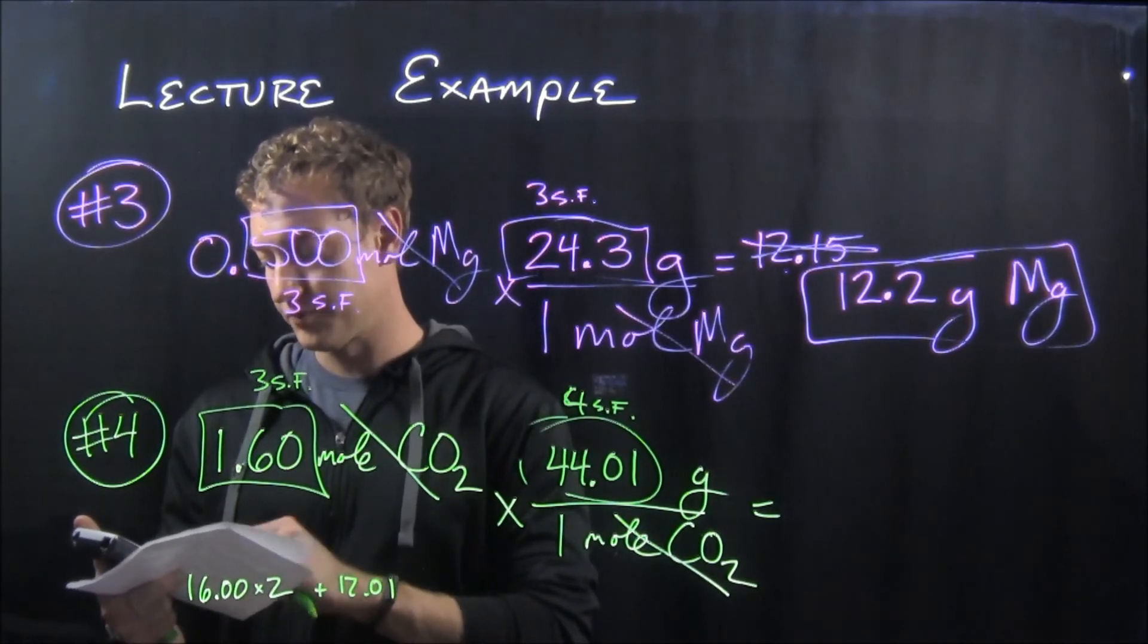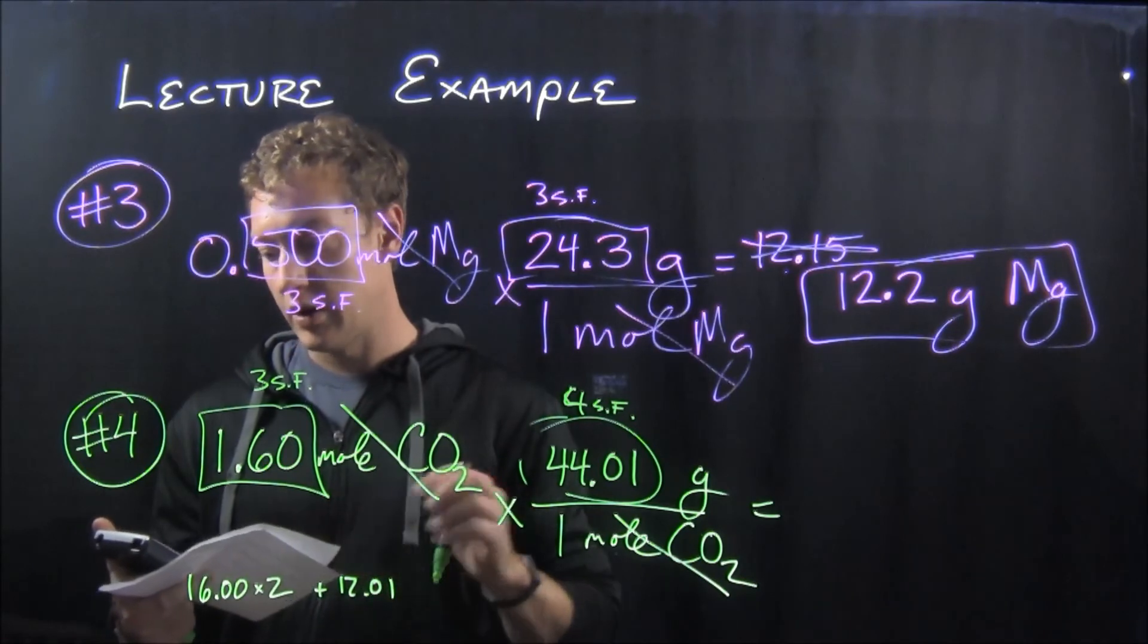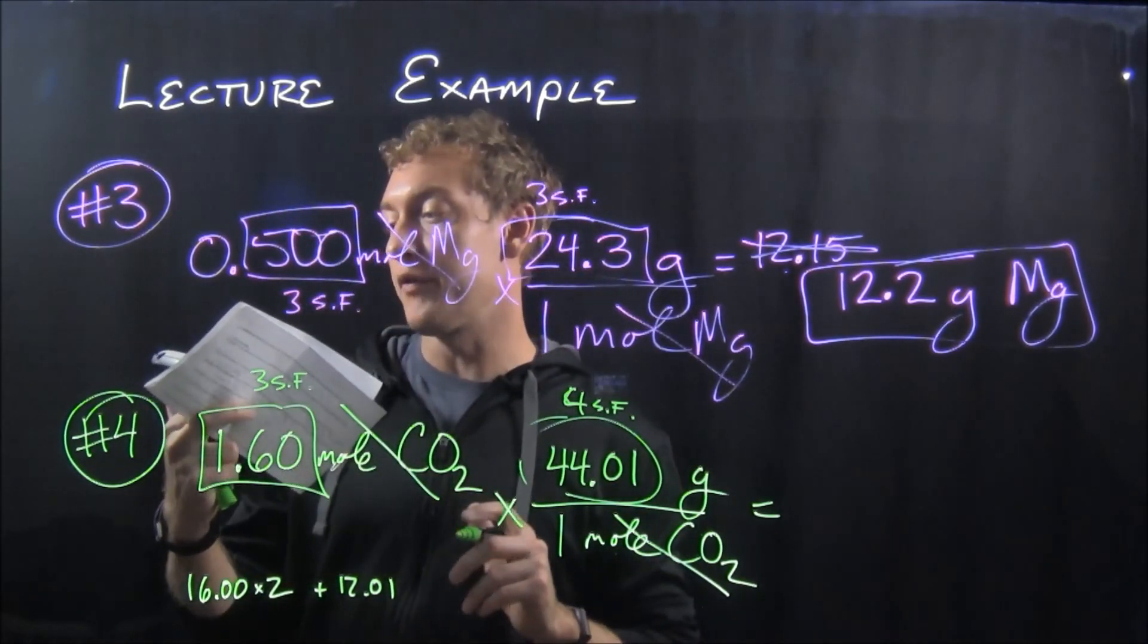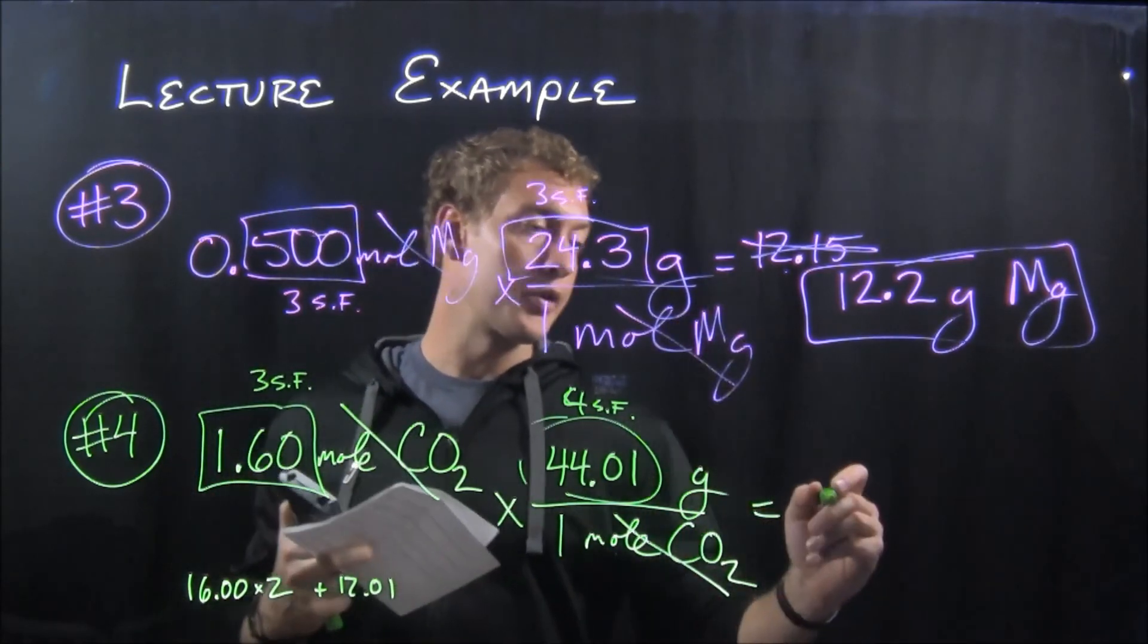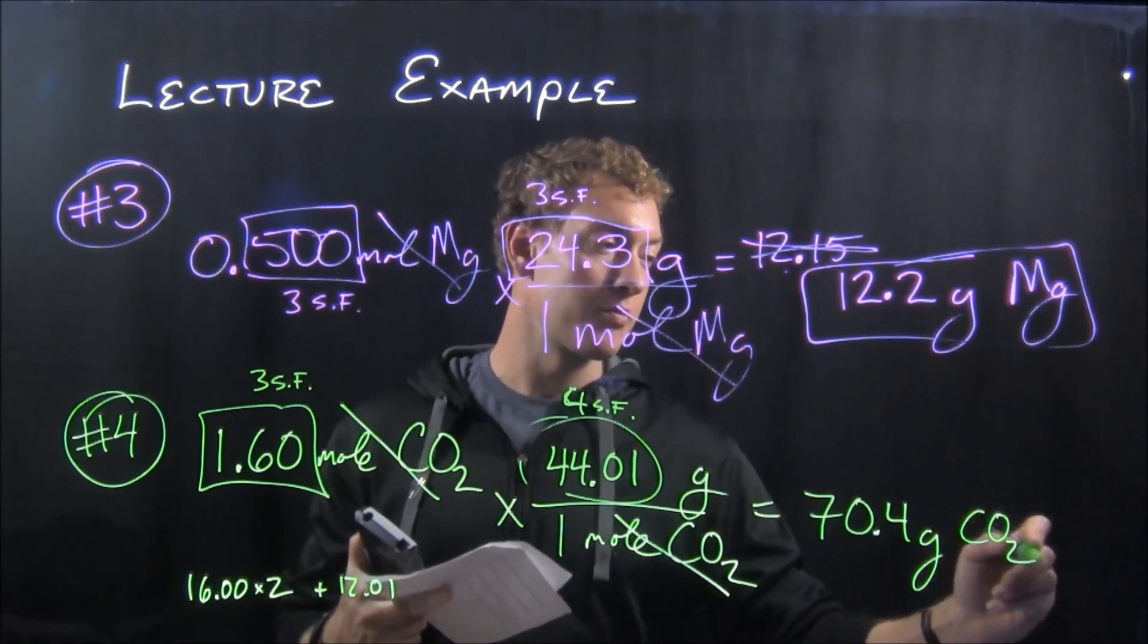And we'll punch that into a calculator. The calculator reports 70.416, rounded to three sig figs: 70.4 grams of CO2.